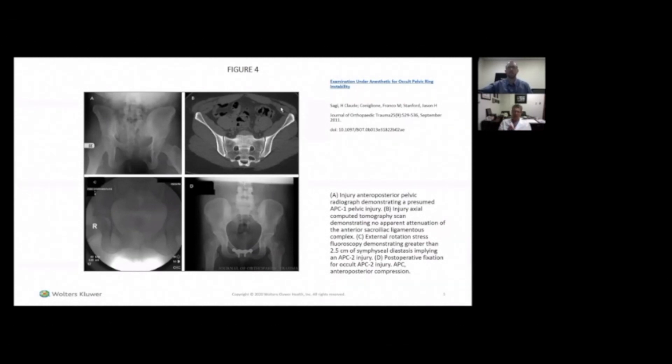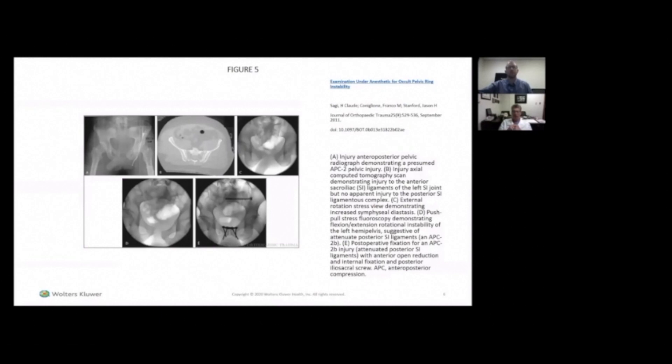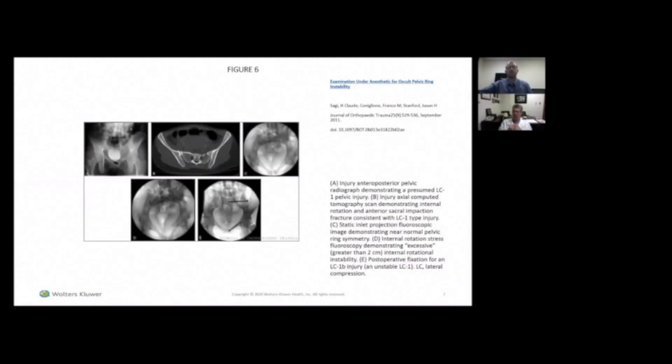And the other thing that was interesting that came out of the EUAs was this whole concept of the occult LC3 that we're all familiar with. You start to examine some of these and you've got a lateral compression, but lo and behold, actually the contralateral SI joint is actually unstable a little bit. The EUA can help elucidate some of these occult LC3 fractures in addition to just the plain lateral compression.